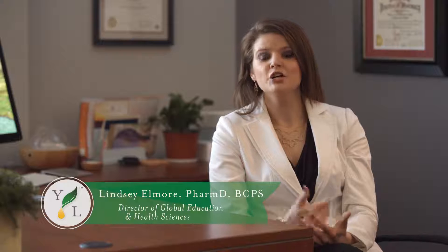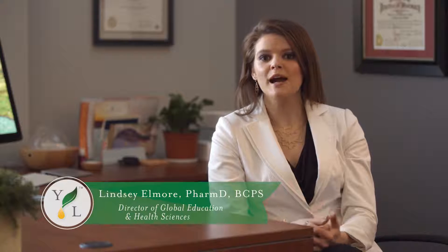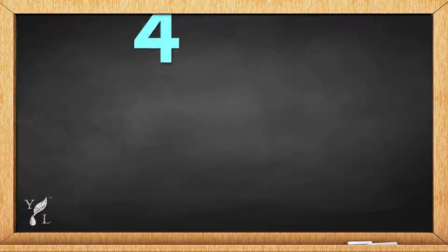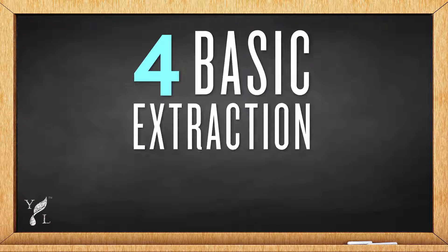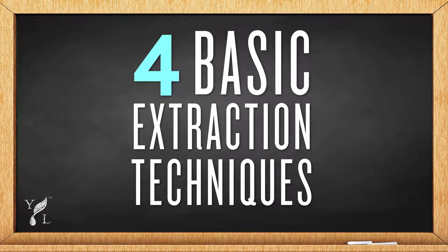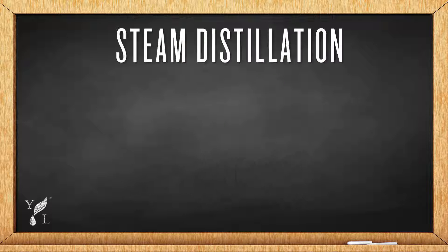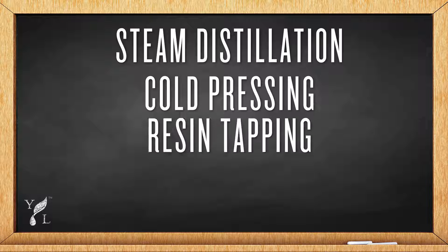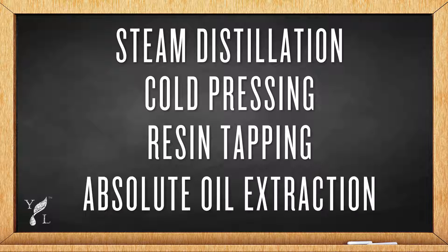In this video, you will learn how essential oils are extracted. You may wonder how essential oils are extracted from plants. Four basic extraction techniques exist: distilling, cold pressing, resin tapping, and absolute oil extraction, and I'd like to cover each of these in detail.